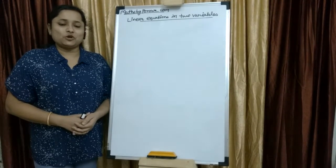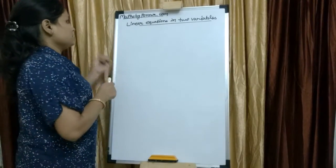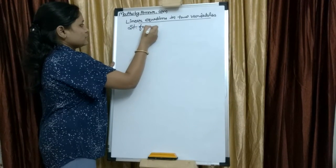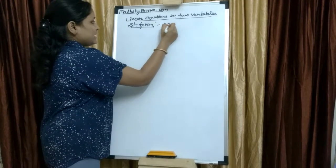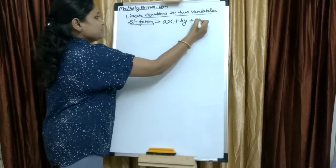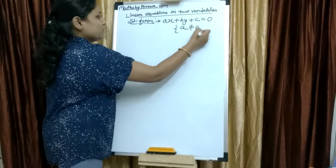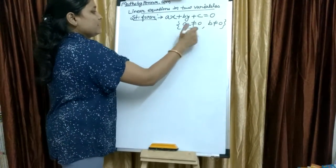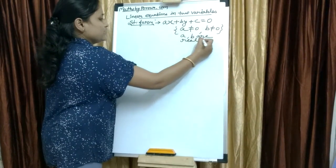Hello students, today our topic is linear equations in two variables. The standard form of a linear equation in two variables is Ax plus By plus C equals to 0. Here, A is not equal to 0 and B is not equal to 0, and A and B are real numbers.